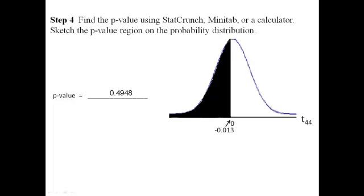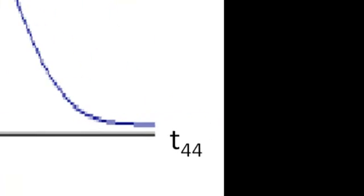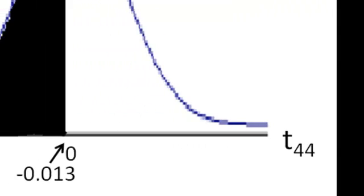So for step 4, we identify the p-value and then sketch in the p-value region on the probability distribution. Now, notice that we've identified our probability distribution as a t distribution with 44 degrees of freedom. And we've identified the value of the test statistic as -0.013 and notice that's just barely to the left of t = 0.